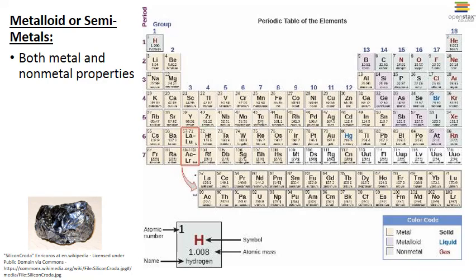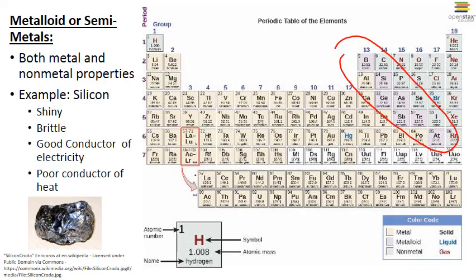In a zigzag line between the metal and the nonmetal regions, we have the metalloids or semimetals. They're colored purple on this table. These are substances that display properties of both metals and nonmetals. A good example of this is silicon. Silicon is definitely shiny in its pure form, pictured here. But it's also brittle and breaks easily. It can be a good conductor of electricity, but it's definitely a poor conductor of heat.